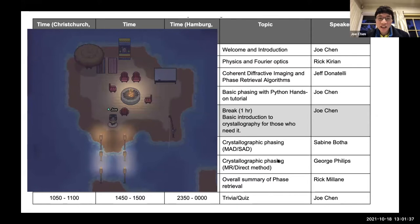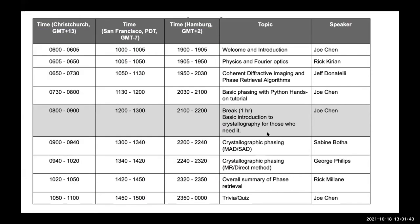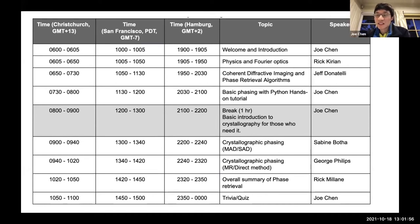We'll have a quiz at the end — Bill can explain how it works later. First up is Rick Kirian from ASU. He's my boss, my colleague, and first and foremost my most trusted friend. Here's Rick.